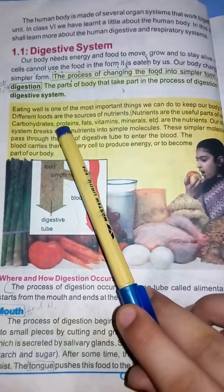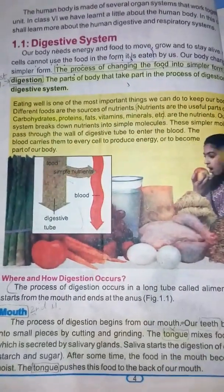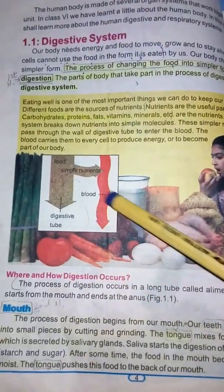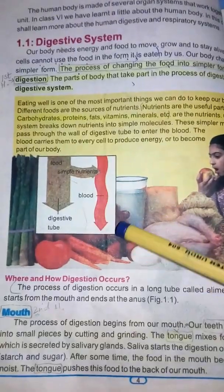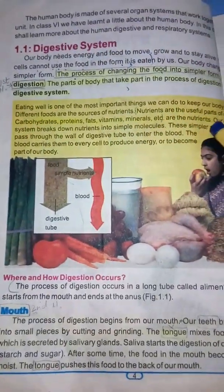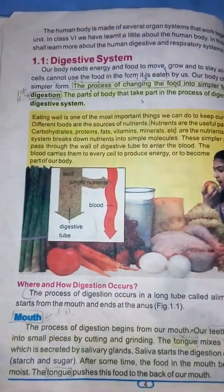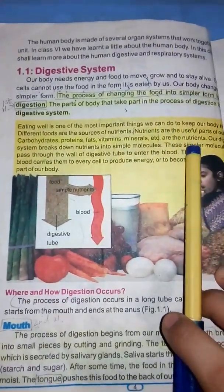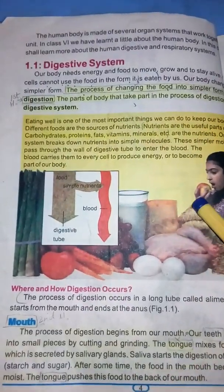Why do we need to eat good food? Different foods are the sources of nutrients. Foods such as eggs, tomatoes, many vegetables, milk, and apples are sources of nutrients. Nutrients are the useful parts obtained from our food, and they include carbohydrates, proteins, fats, vitamins, and minerals. These are all called nutrients.